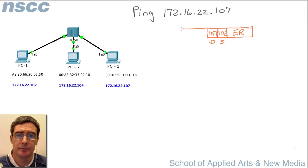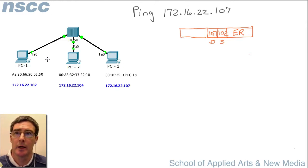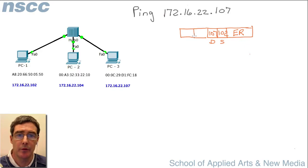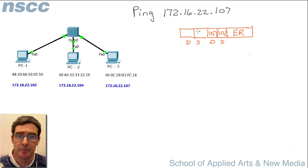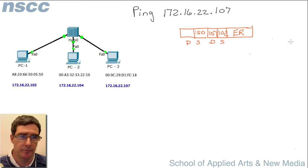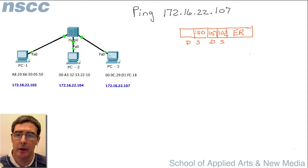PC1 cannot just send a packet on the network because NICs don't work at layer 3. They only respond to frames and destination addresses that have media access control layer addressing. So PC1 has to add MAC layer addressing — destination and source. It knows its own MAC address, ending in 50, but it doesn't know the destination MAC address. This is where ARP comes in. PC1 has to find out the MAC address of PC3, and it does that using an ARP frame.